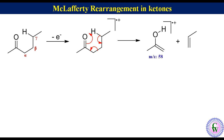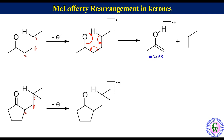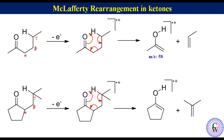This is an example of a cyclic ketone with a gamma hydrogen in the alkyl side chain. Removal of one electron from the molecule will give a radical cation which after McLafferty fragmentation will give the radical cation of the enolic form of cyclopentanone and 2-methylpropene. The m/z value of this radical cation will be 84.